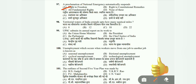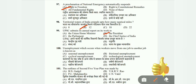Question 98: The territorial waters of India extend up to how many nautical miles — 8, 12, 18, or 22? The correct answer is B, 12 nautical miles. Question 99: UPSC submits its annual report on its works to the Union Home Minister, the President, the Parliament, or the Chief Justice of India? The correct answer is B, the President.